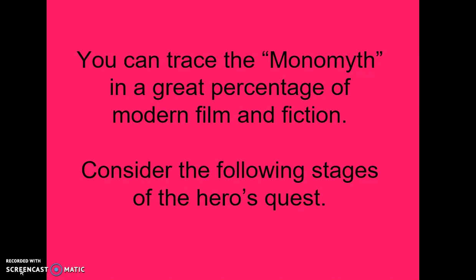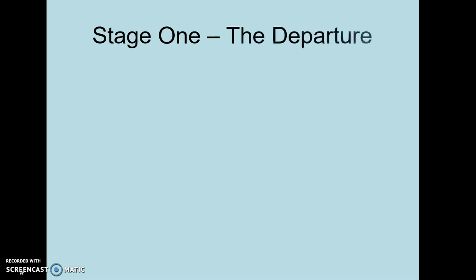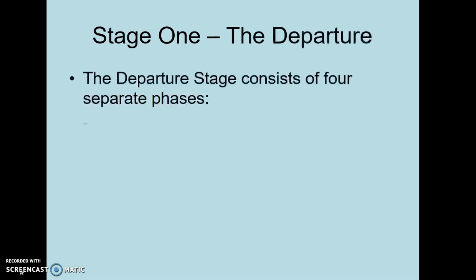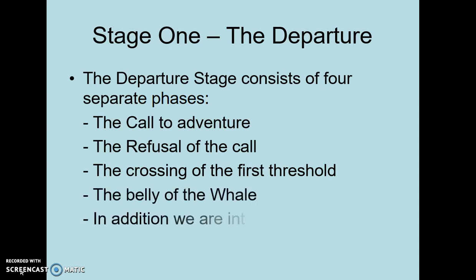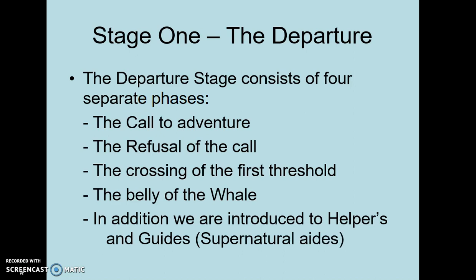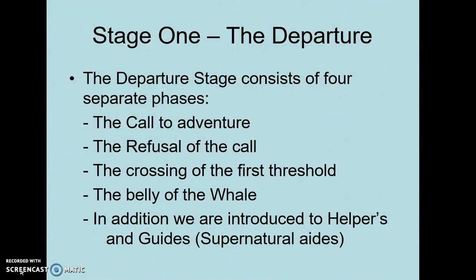When analyzing the monomyth, we look for specific stages and steps. It is divided into three stages. Stage one is the departure, which consists of four separate steps: the call to adventure, the refusal of the call, the crossing of the first threshold, and the belly of the whale — and this is also where we are introduced to helpers and guides. The second stage is the initiation, which is the bulk of the hero's journey.